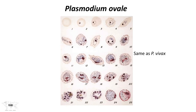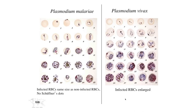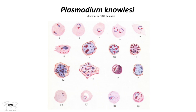Plasmodium ovale appears very similar to vivax on smear. Plasmodium malariae shows cells that are not enlarged and lack Schüffner's dots. Plasmodium knowlesi can be challenging because it can look like Plasmodium malariae with band forms, but produces much higher parasitemia because — like falciparum — it can infect red blood cells of many stages.